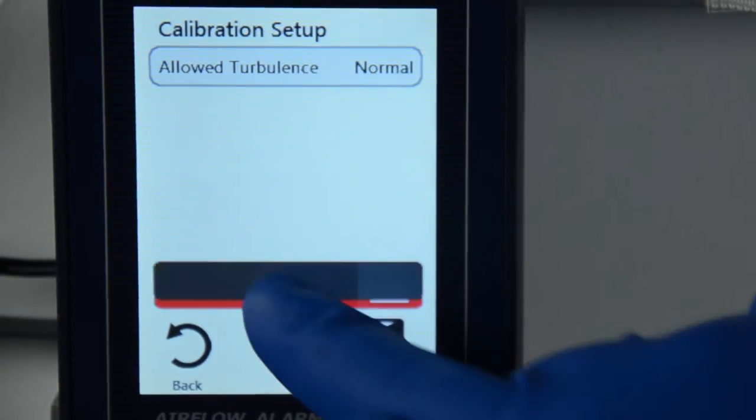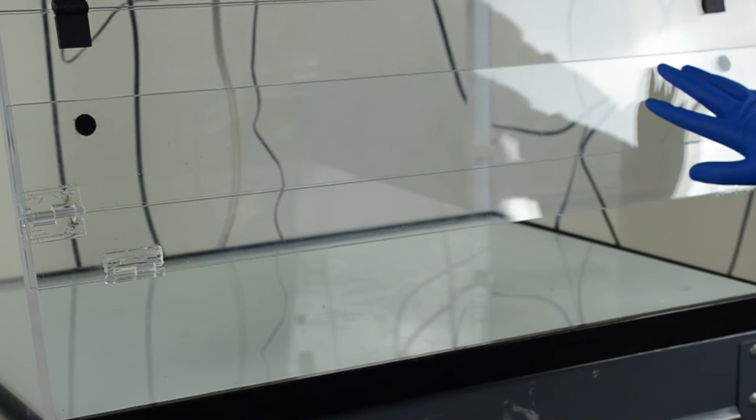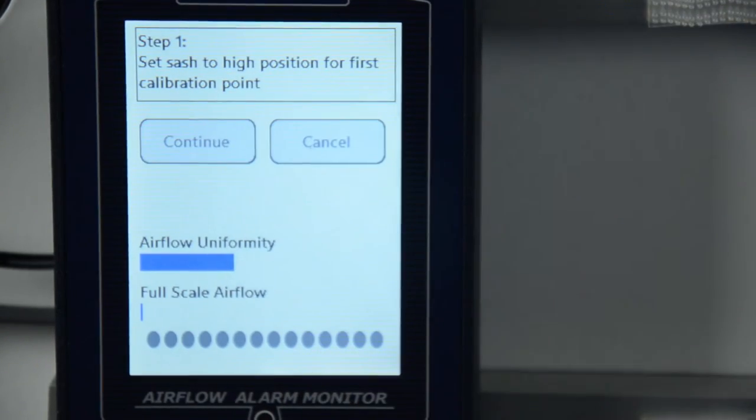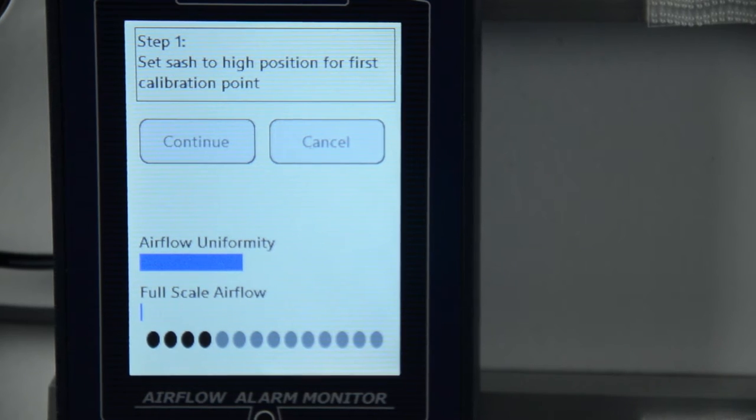Select the red calibrate button to initiate the sequence. For step one, open your sash into a high position or unsafe airflow state and then select continue. Wait until the progress bar completely fills up.